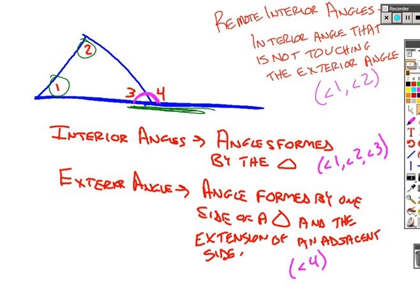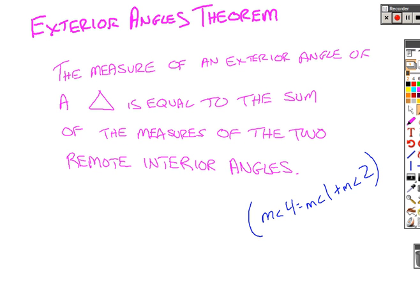And all our theorem said was that the remote interior angles, when you add them up, that's the same as the measure of the exterior angle. So in that picture, the measure of angle 4 was the same as 1 plus 2.